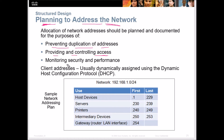Client addresses are usually assigned using DHCP — Dynamic Host Configuration Protocol. That allows us to set a range of IP addresses and have those automatically handed out. Either the router is running a DHCP server, or we have some type of DHCP service inside our network, and those are passing out the IP addresses.